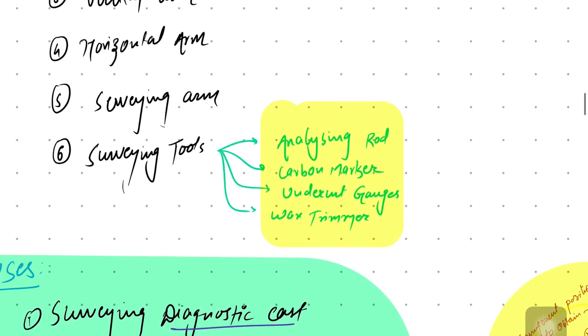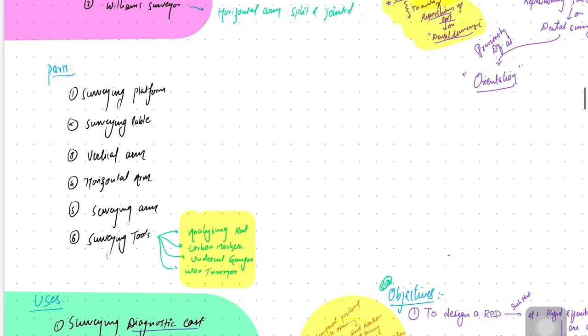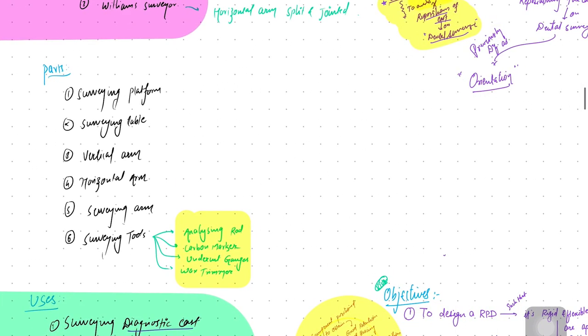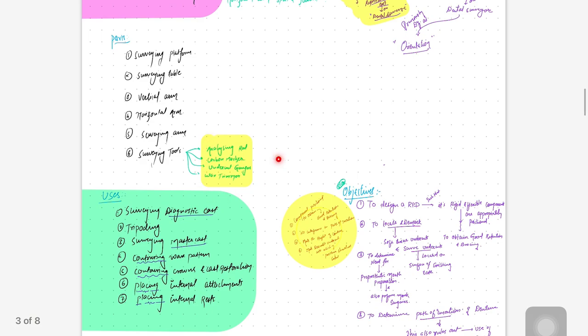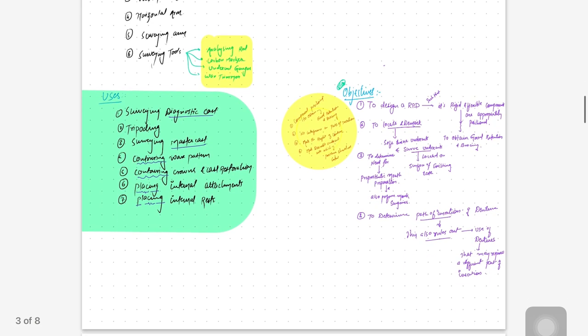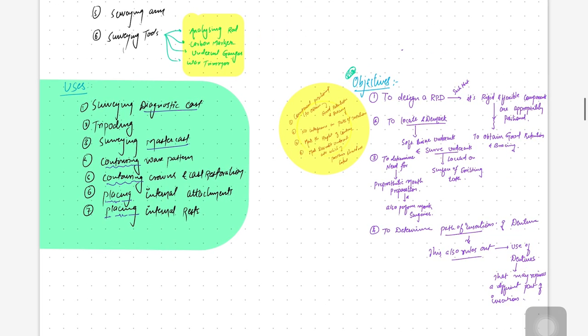The surveying tools — there are four: first, the analyzing rod; then the carbon marker; the undercut gauge; and the wax streamer. These four tools are important for long-answer questions. The typical exam questions are: definition of surveyor, types, parts with diagram, and the surveying tools.